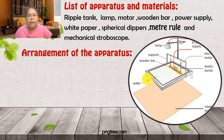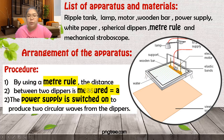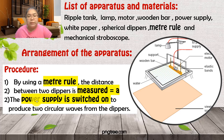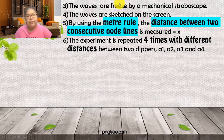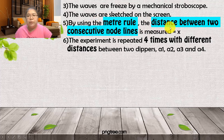The procedure: first, use a meter rule to set up the manipulate variable 'a' — specify a value or symbol for A. Then switch on the power supply so the dippers produce two circular waves. The wave is then frozen using the stroboscope so you can observe the responding variable. After freezing, sketch the pattern on the screen.